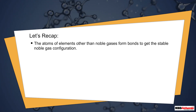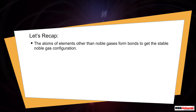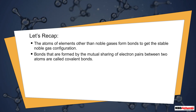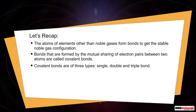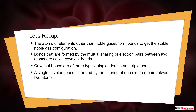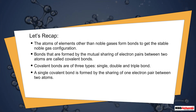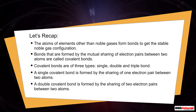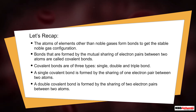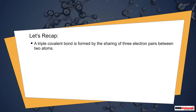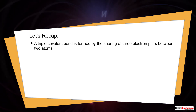Let's recap. Atoms of elements other than noble gases form bonds to achieve the stable noble gas configuration. Bonds formed by the mutual sharing of electron pairs between two atoms are called covalent bonds. Covalent bonds are of three types: single, double, and triple. A single covalent bond involves sharing of one electron pair, a double covalent bond involves two electron pairs, and a triple covalent bond involves three electron pairs between two atoms.